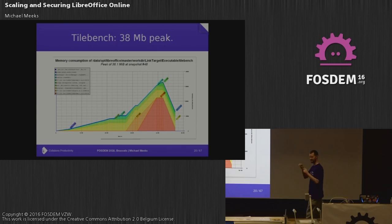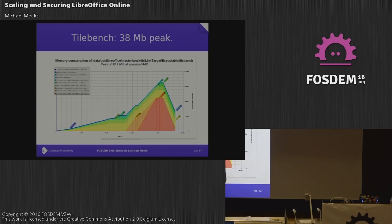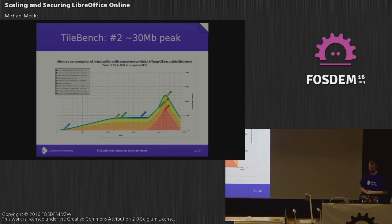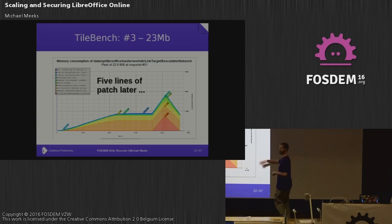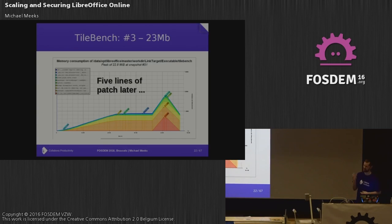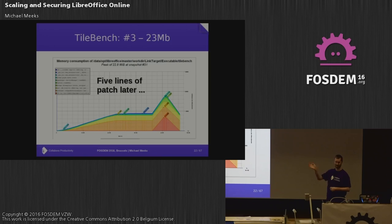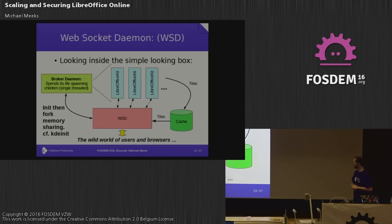I fired up Massif to look at where our memory use is — a tile bench that benchmarks rendering tiles. I was pretty convinced strings would be the problem, but it turns out there was a horrendously stupid Kyrie manipulation as the huge culprit. Within a few minutes we saved 8 megabytes per user, and with another five-line patch we went from 38 to 23 megabytes per user. LibreOfficeKit is a nice API, but behind it there is a LibreOffice — it likes to create big windows you can't see and draw things into them, wasting CPU time.